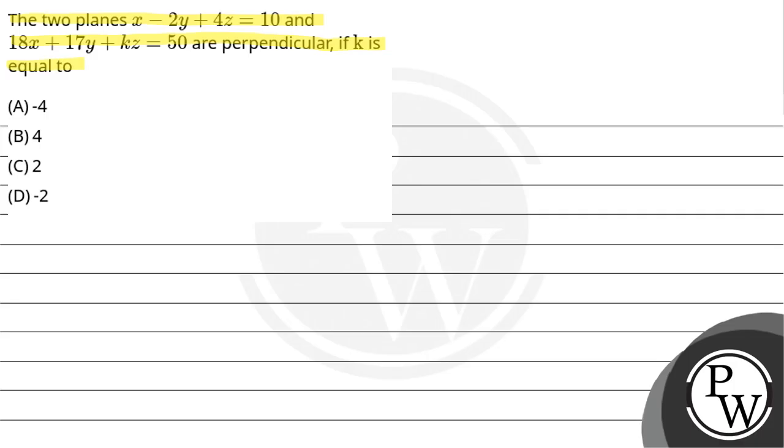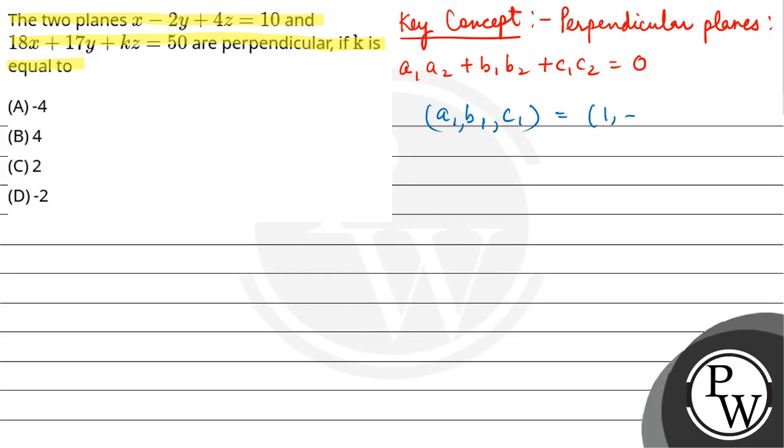So here our key concept is that for perpendicular planes, a1a2 plus b1b2 plus c1c2 equals 0. So here, a1, b1, c1 is equal to 1, minus 2, 4, and a2, b2, c2 is equal to 18, 17, k.